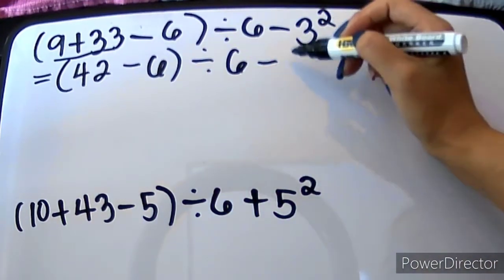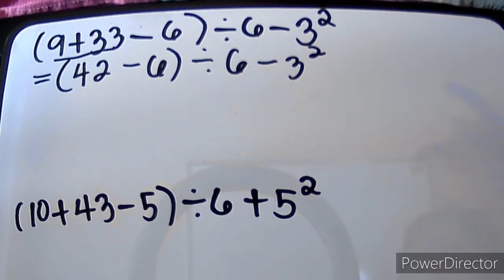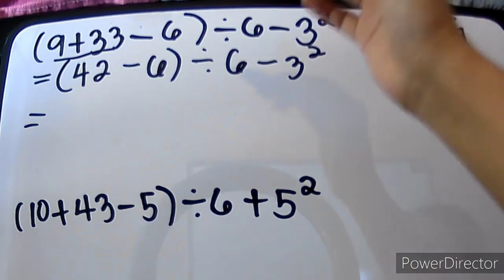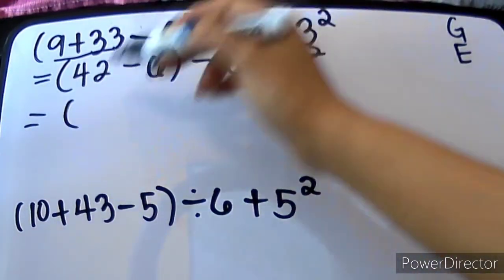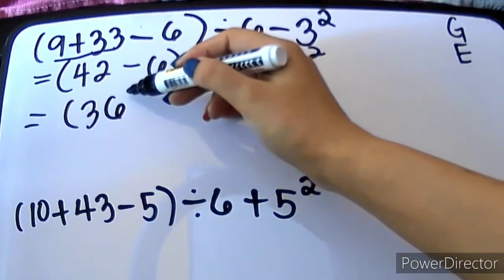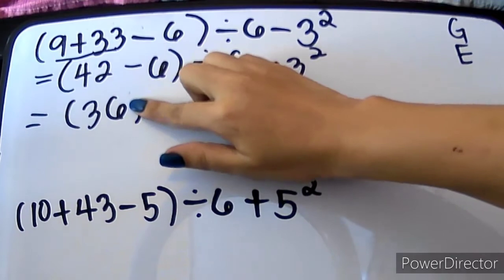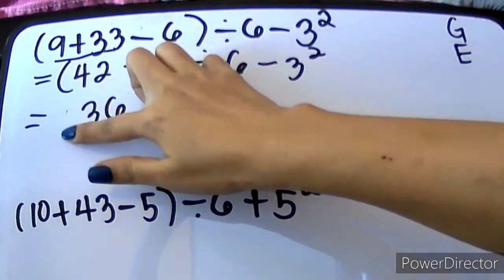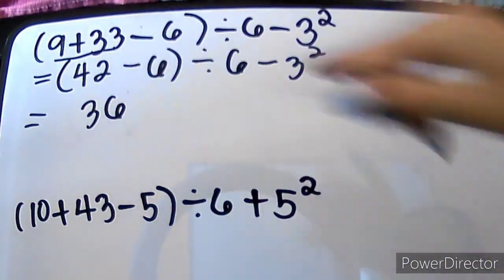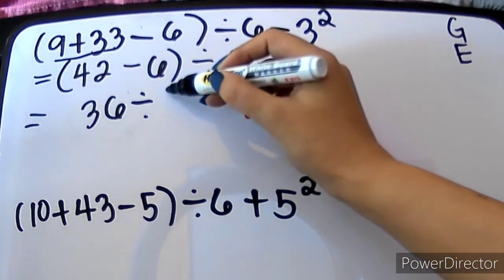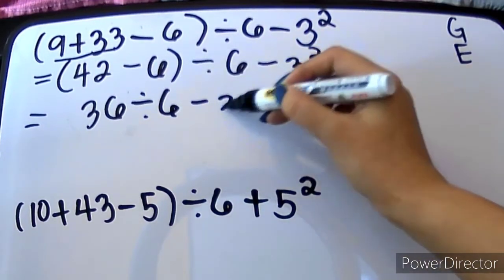We cannot yet do our E kasi meron pa tayong G — nasa G pa lang tayo, wala pa tayo sa E. So, let's subtract. That is 36. Pwede naman pong wala na yung ating parenthesis because wala na rin namang operation yung ating 36 — 42 minus 6 will give us 36. And then kopihin muna natin yung divide 6 minus 3 squared.